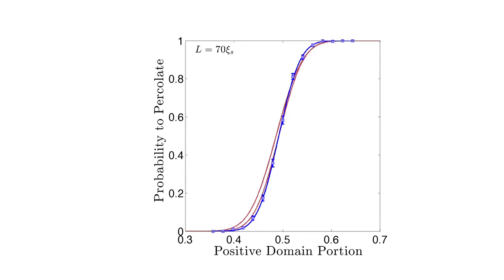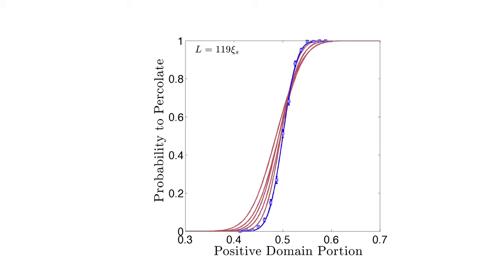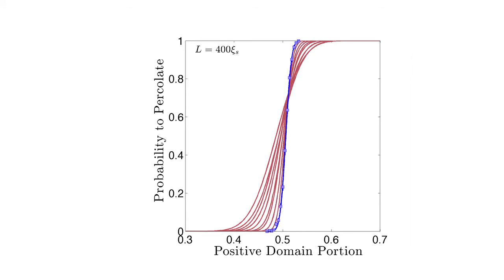Conducting a finite size analysis, we examine how this probability changes as the system size increases. This allows us to extrapolate to the thermodynamic limit where the transition is discontinuous, and hence identify the percolation threshold and the correlation length critical exponent.